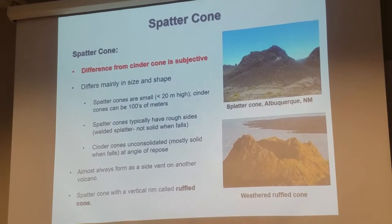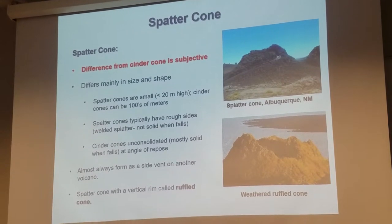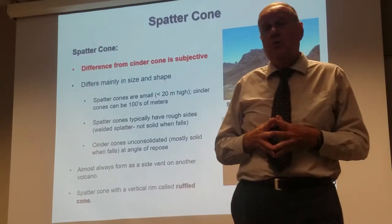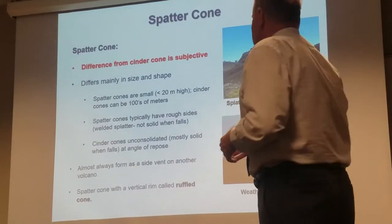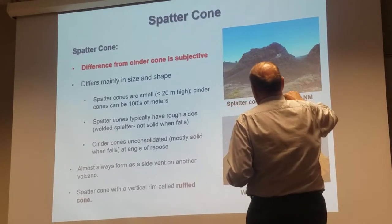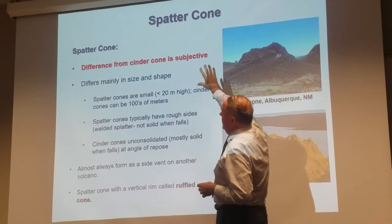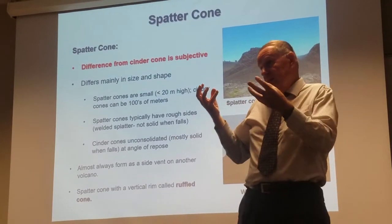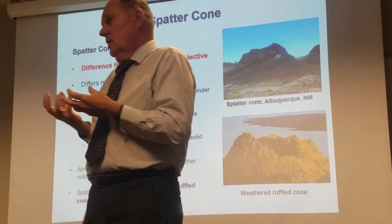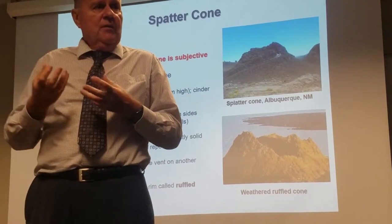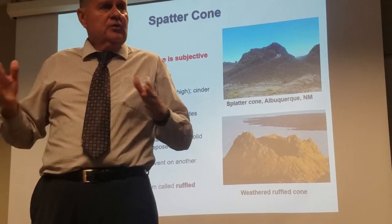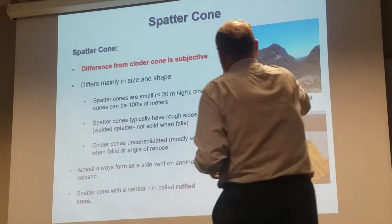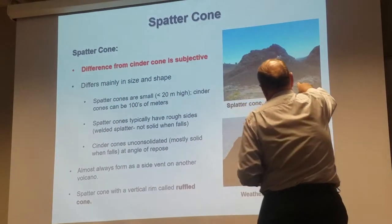So that's the spatter cone. Like I mentioned, sometimes the difference is simply subjective — kind of the eye of the beholder. Again, the difference is that in spatter cones, quite often the material is still relatively molten when it hits the ground, so it does a better job of welding than in a typical cinder cone. So sometimes you can see the slopes are a bit steeper.